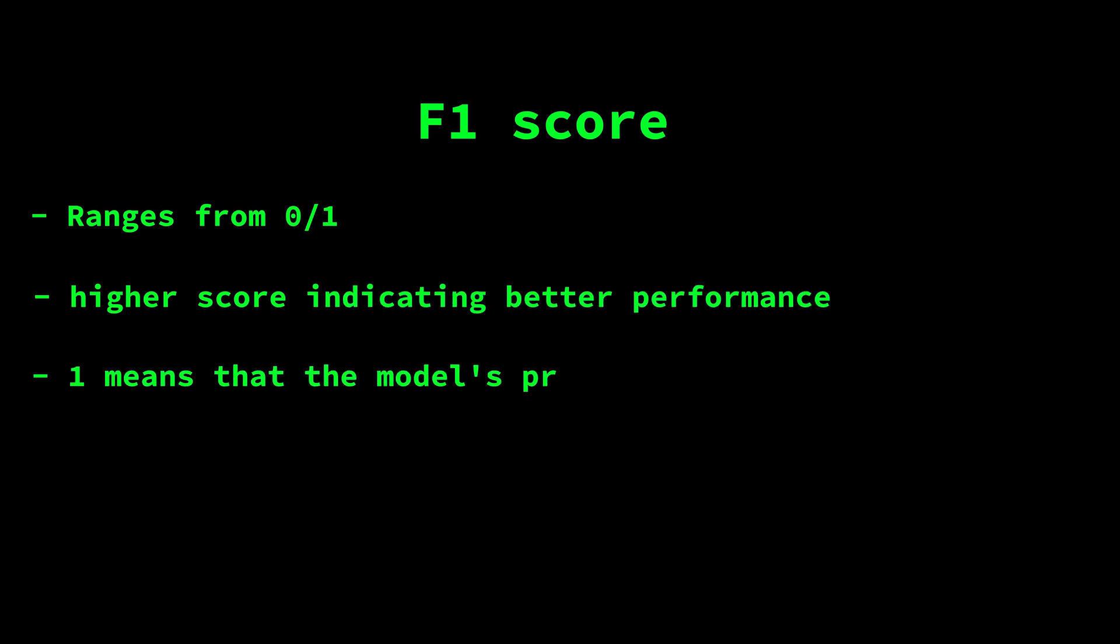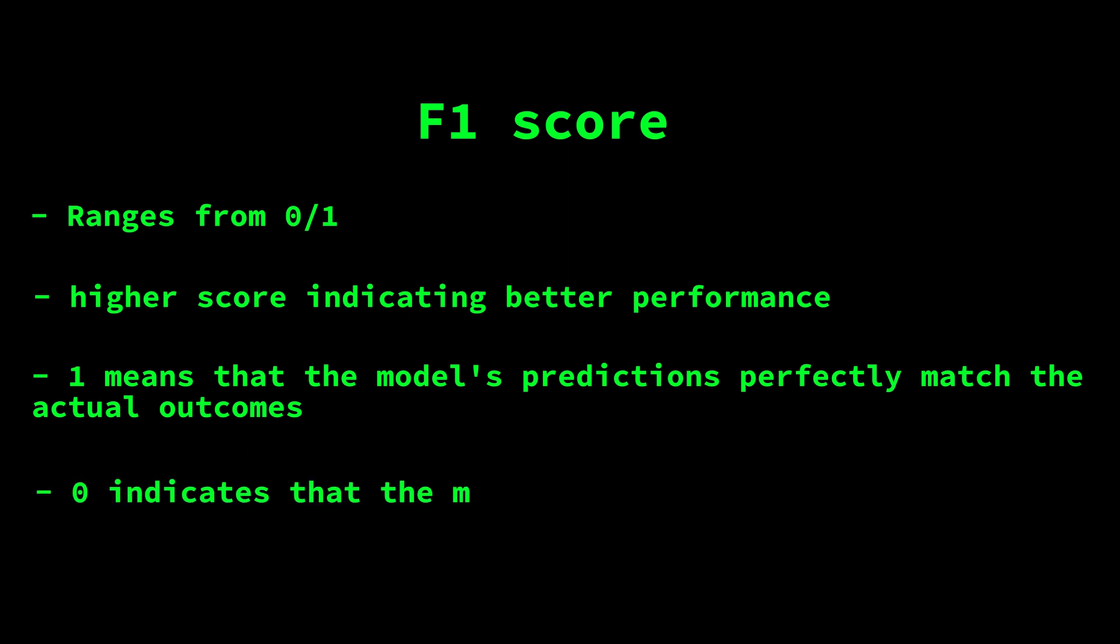The F1 score ranges from 0 to 1, with a higher score indicating better performance. A score of 1 means that the model's predictions perfectly match the actual outcomes, while a score of 0 indicates that the model's predictions are completely wrong.